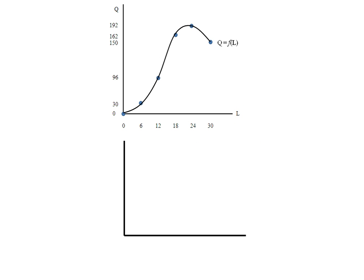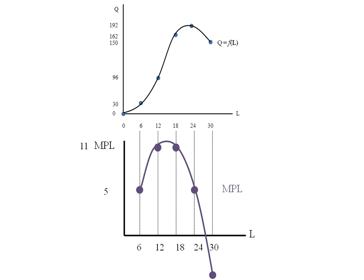Let's plot it on a graph. Again, the horizontal axis will be labor, but now the vertical axis will be the marginal product of labor. I can drop down those values of labor and then plot my points: 6 and 5, 12 and 11, 18 and 11, 24 and 5, 30 and negative 7. Connecting those points, I can label it MPL.